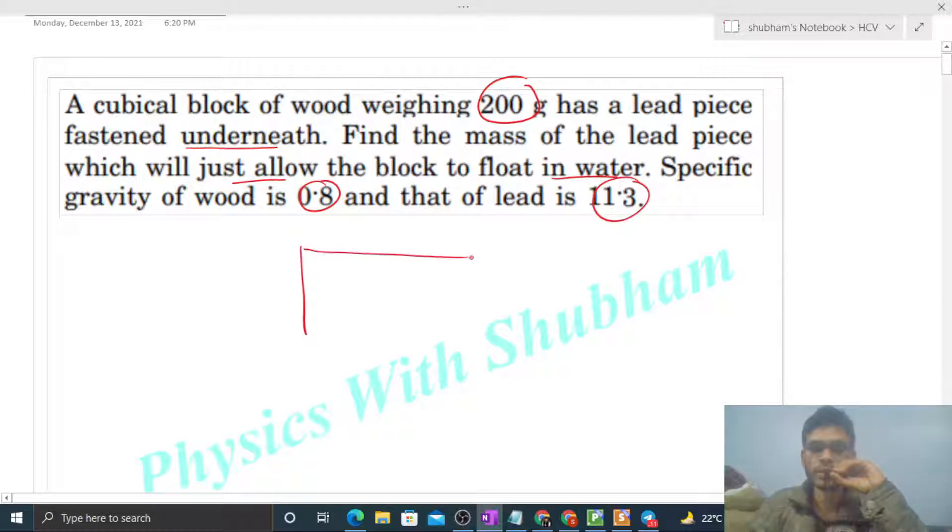Dekho ish tarah se humari paas ek cube, wooden cube, and iske niche humari paas ye lead. So let's say jo mass is wooden cube that is a small m and mass of this lead is a capital M. So value of a small m is given, that is 200 gram, and we have to find out the value of capital M.